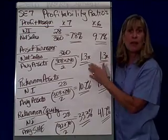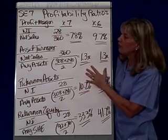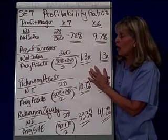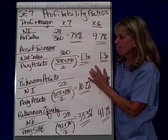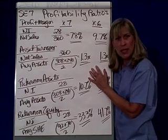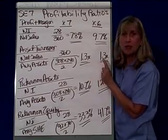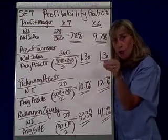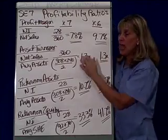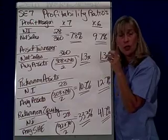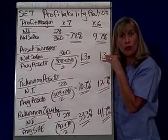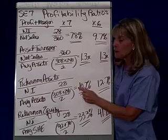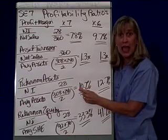The previous year was the same thing, so the asset turnover ratio didn't change between the two years. That means I can now take the profit margin ratio, which hones in on the income statement, and the asset turnover ratio, which hones in on the balance sheet, and combine them together into something we call return on assets.